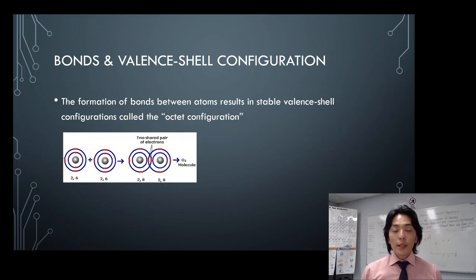For example in this diagram you are seeing two oxygen atoms. How many electrons are there in the outermost shell of oxygen? Six.